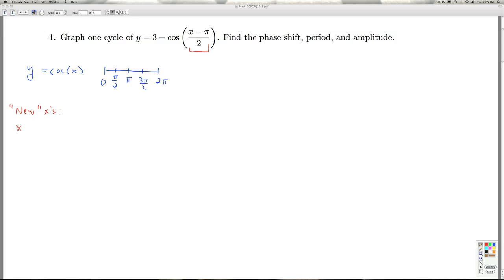So I set x minus π/2 equal to each of these five points. That's 0, π/2, π, 3π/2, and 2π.